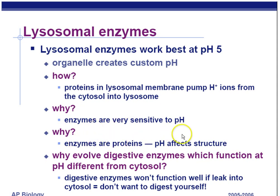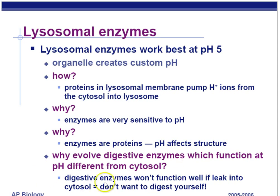Why evolve a digestive enzyme that functions at a pH different from the rest of the cell? Well, the digestive enzymes won't function well if they leak into the cytosol. If one of those little lysosomes breaks open, it won't kill off the rest of the cell. Having a built-in mechanism to not destroy the cell provides a survival advantage that can be passed on to future generations. The exception is if all the lysosomes release their enzymes at once — that will sufficiently lower the pH to result in cell digestion — but if only one or two leak, it's not going to be a big issue.